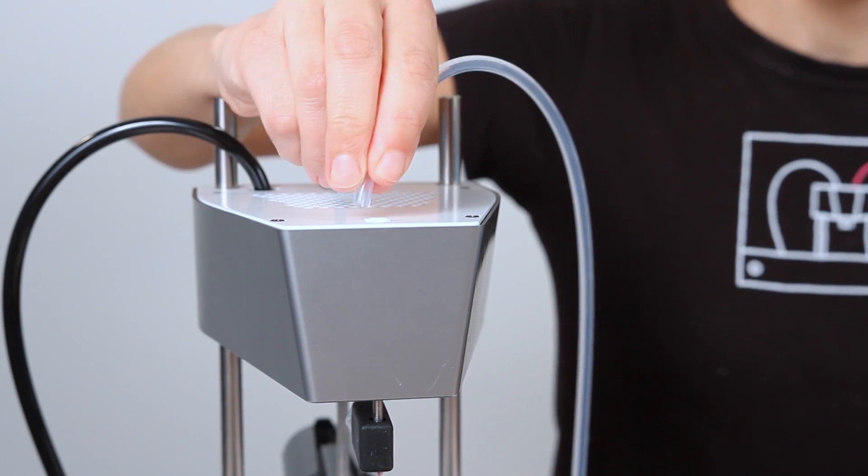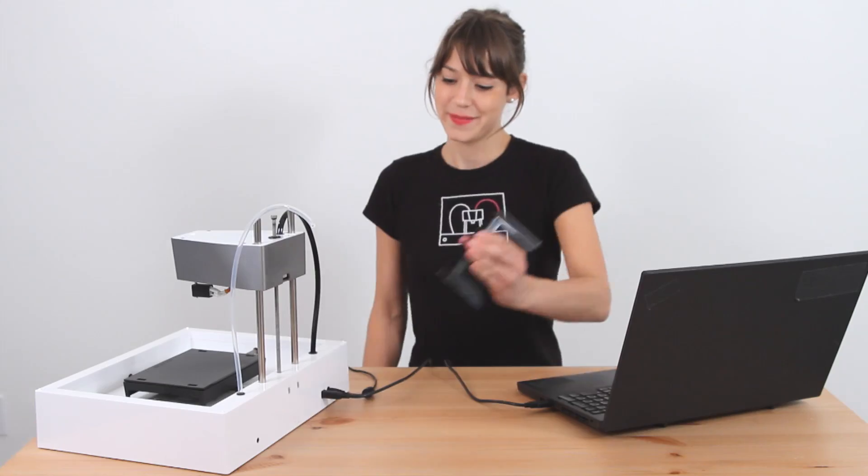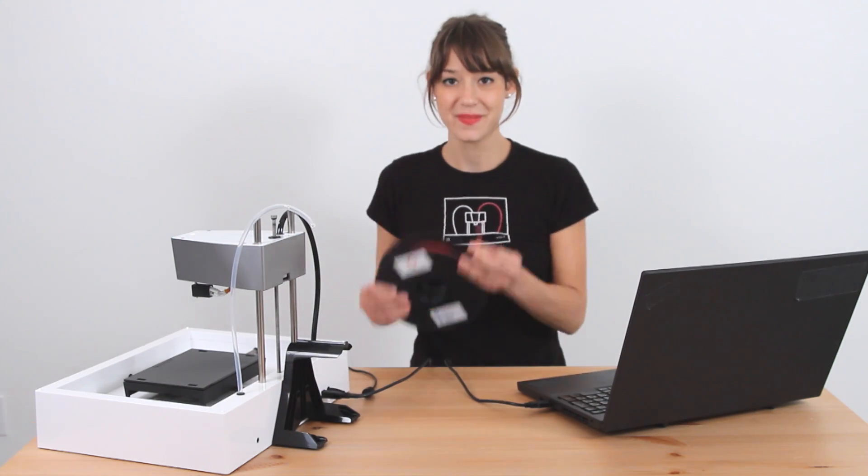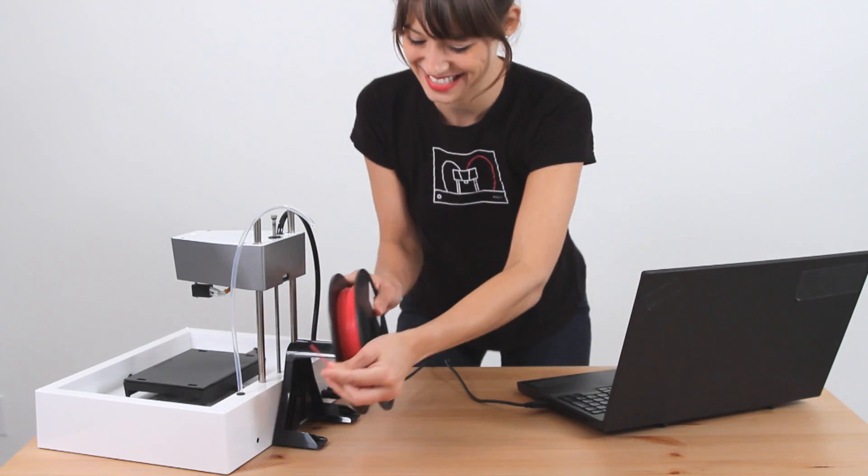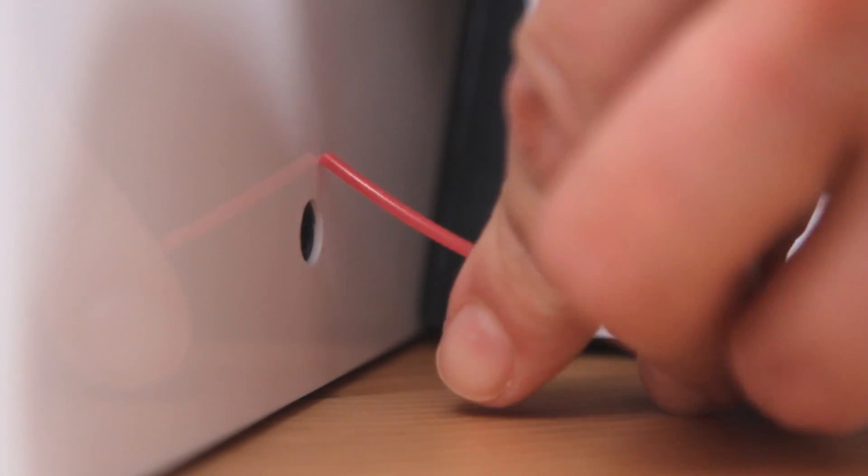Begin by removing this tube here. Now get your spool holder and hook it into the back of your printer. Grab your brand new filament, pop it on the spool holder and feed the end through the hole in the back.